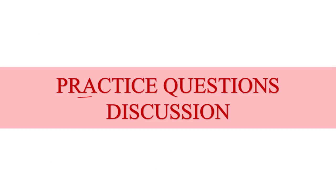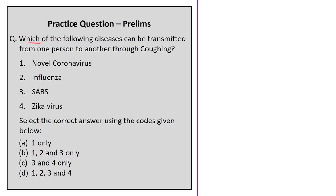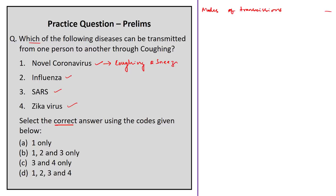The practice question asks: which of the following diseases can be transmitted from one person to another through coughing? The options are: novel coronavirus, influenza, SARS, and Zika virus. The novel coronavirus or 2019 nCoV is a new strain of coronavirus recently identified in Wuhan city of Hubei province, China. Its mode of transmission can be through coughing and sneezing, infecting a healthy person through direct contact or airborne modes.